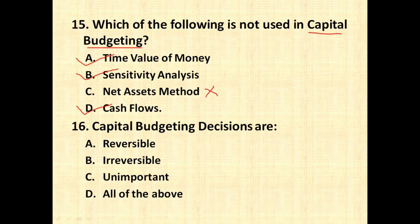The next question is: capital budgeting decisions are — reversible, irreversible, unimportant, or all of the above? Capital budgeting decisions are always irreversible decisions. They are long-term decisions which you cannot make on a daily basis or again and again. For example, if you want to purchase land, a car, or a transport vehicle for business, it is a one-time decision. Therefore, these decisions are always irreversible.